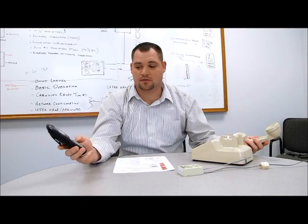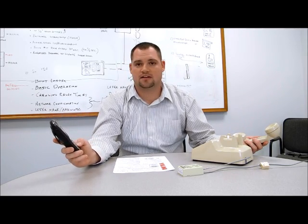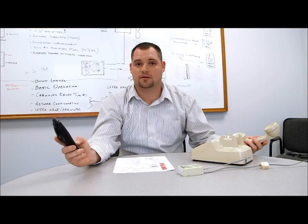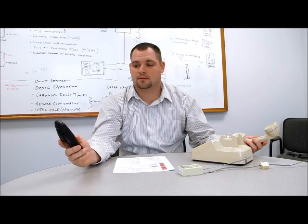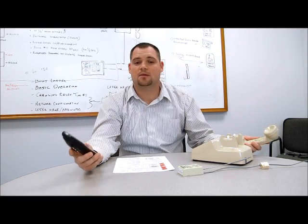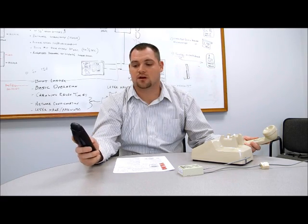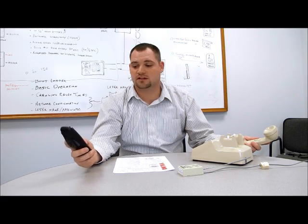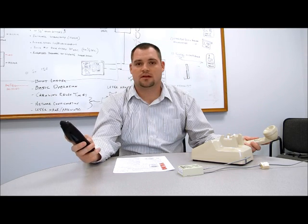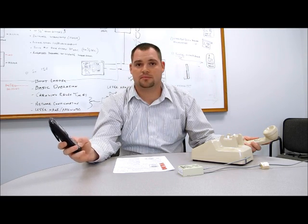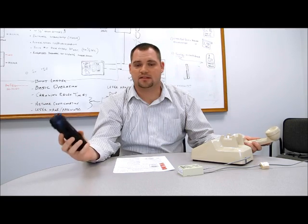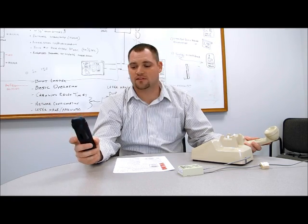You enter in the security code star 845464, get the two beeps. Now I'm going to put the number that I want it to dial which is this phone here. So I'm going to put my extension which is 220 and then I save it under pound zero zero. I got the two beeps indicating that everything worked fine and then I can just go ahead and hang up.